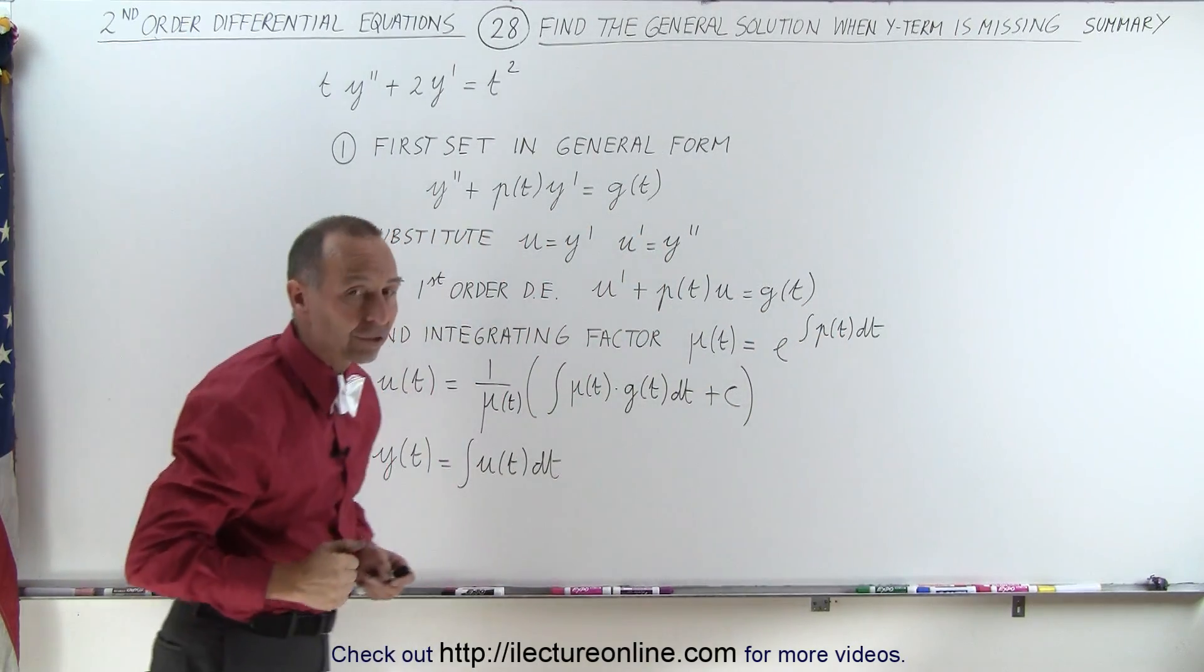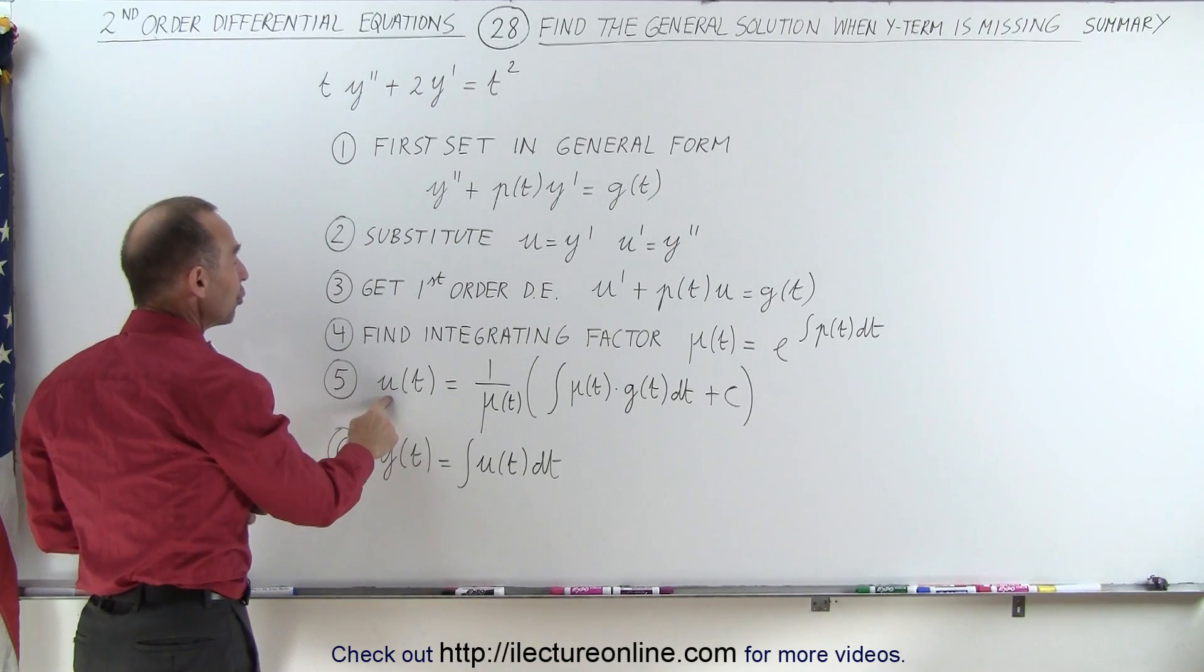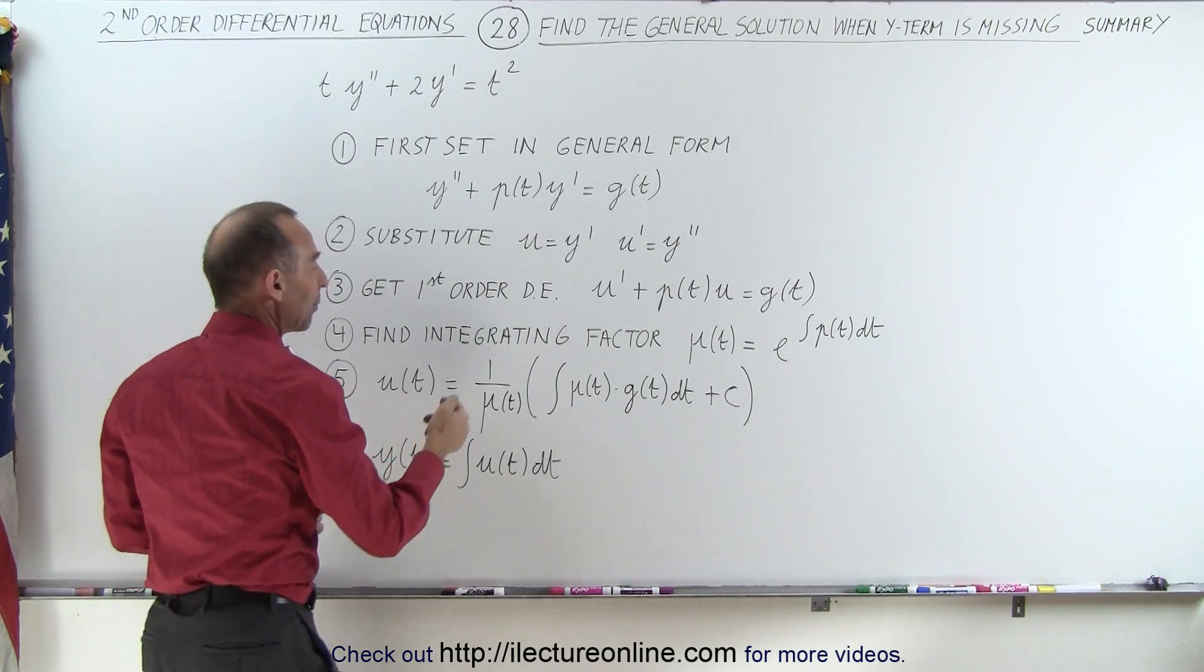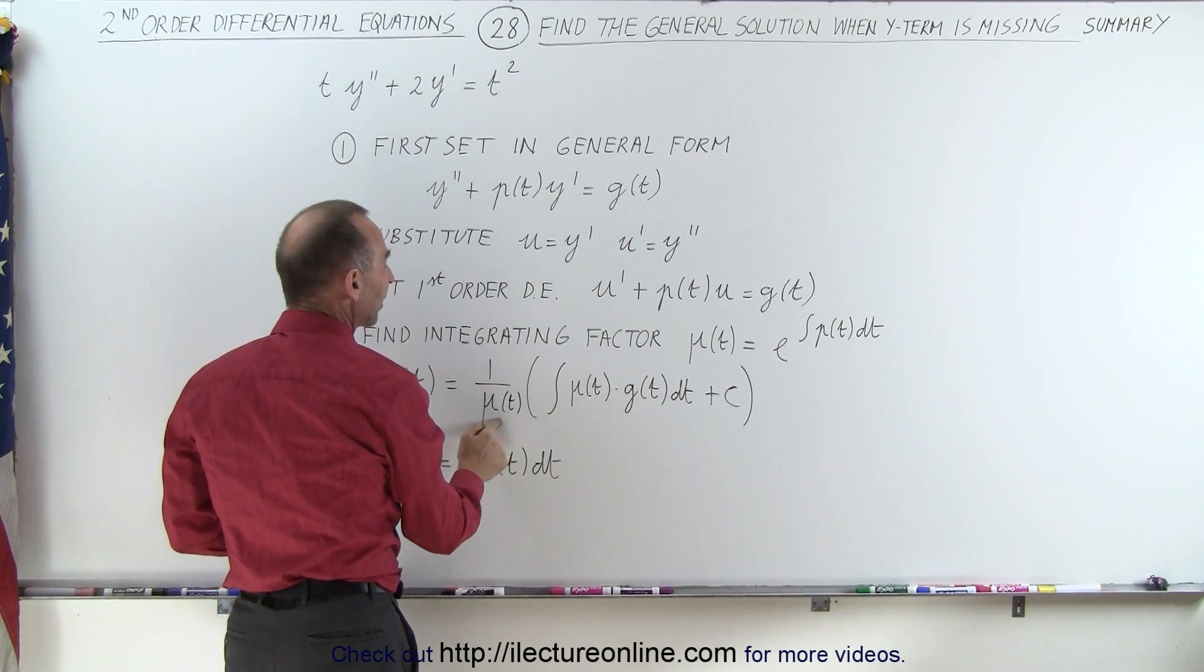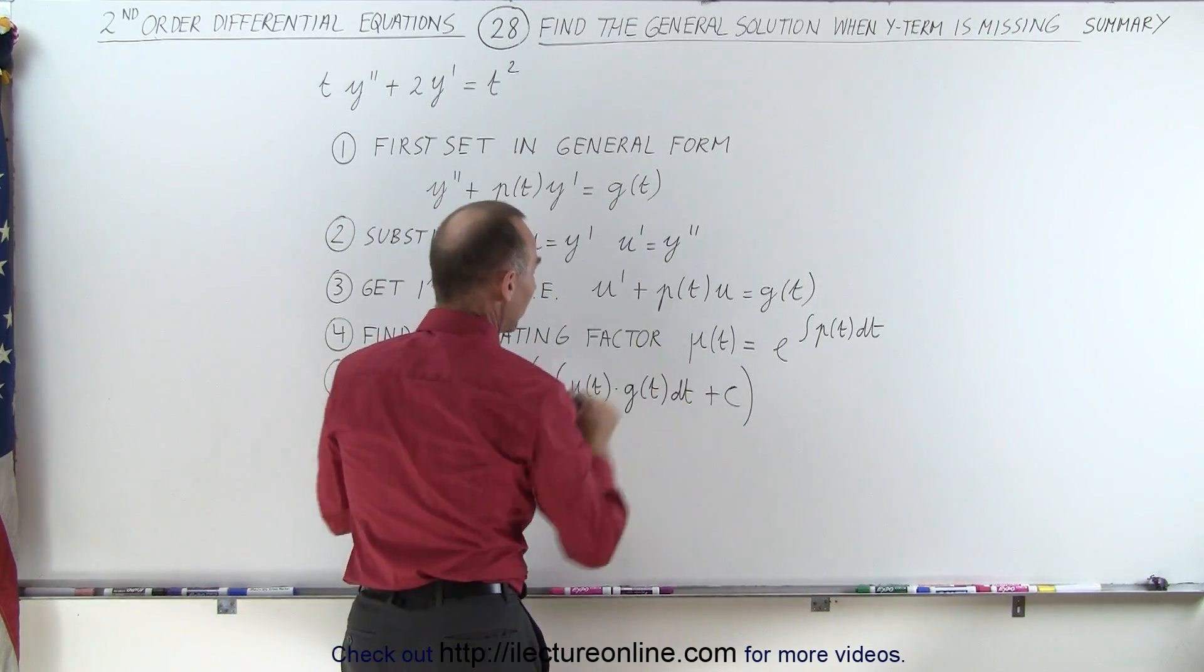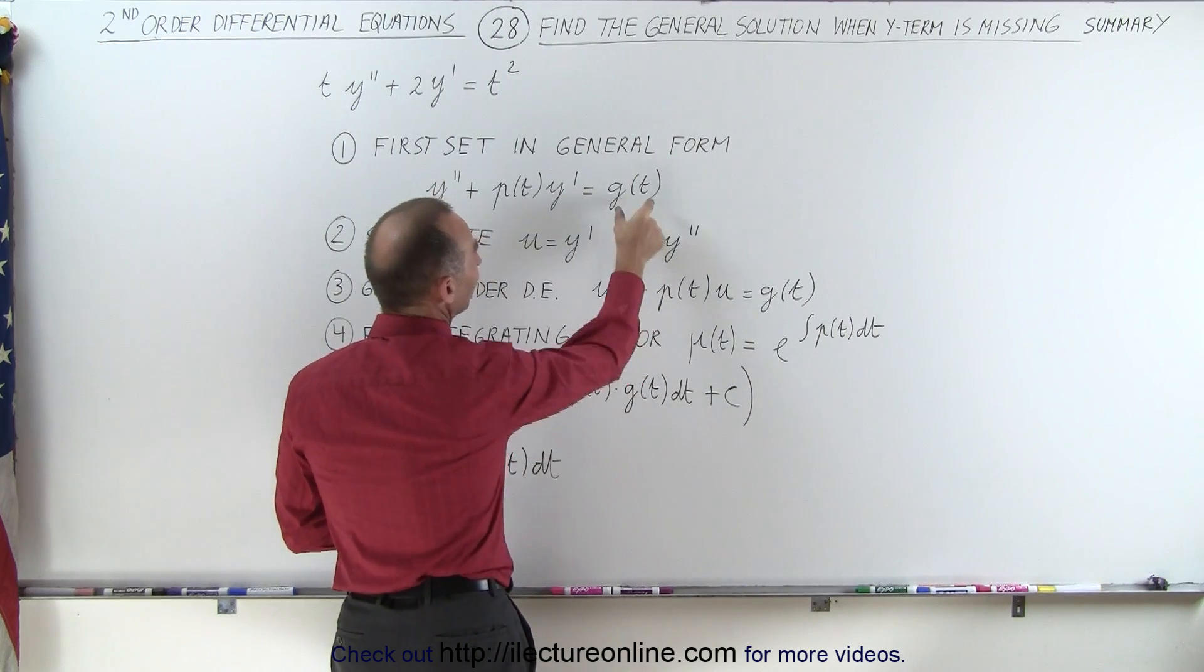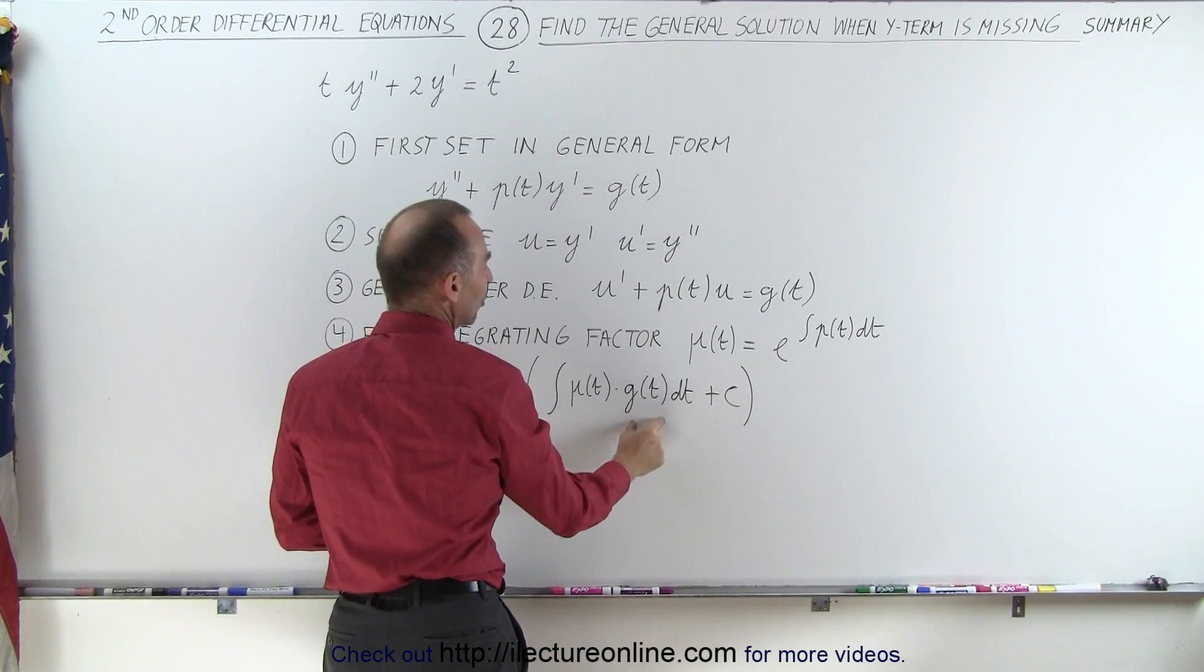We then solve for u, the general solution of the first-order differential equation, by writing 1 over the integrating factor times the following quantity: the integral of the integrating factor multiplied times the function on the right side of the equal sign, g of t, plus some constant of integration.